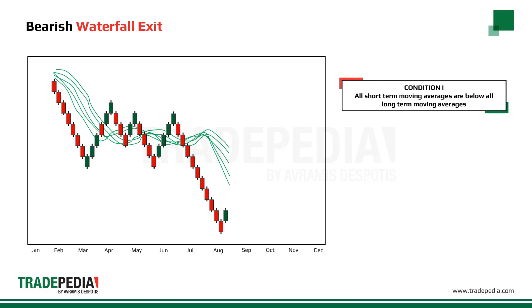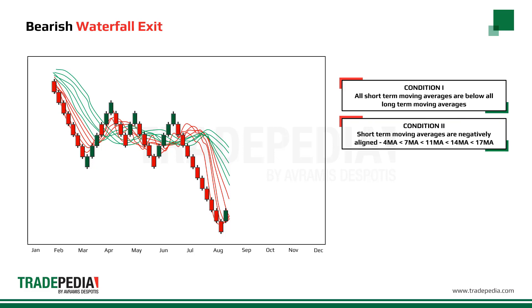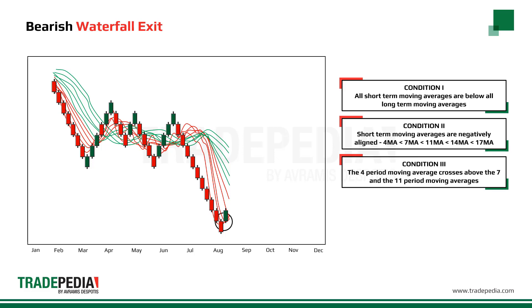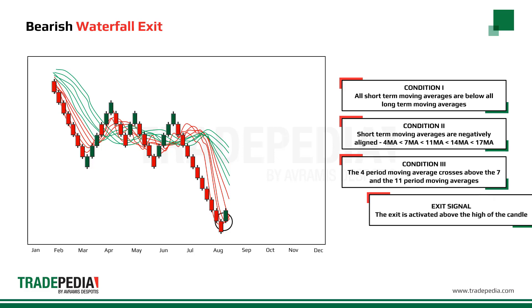A bearish waterfall exit is given when the following conditions are met. Condition one: all short-term moving averages are below all long-term averages. Condition two: all short-term moving averages are negatively aligned. Condition three: the 4 period moving average crosses above the 7 and 11 period moving averages. The exit is activated below the low of the candle that generated the signal.